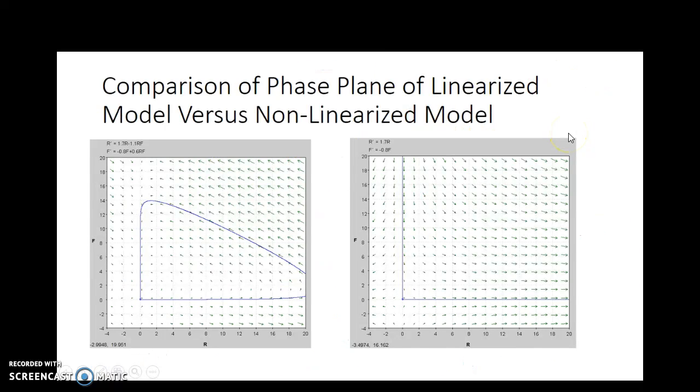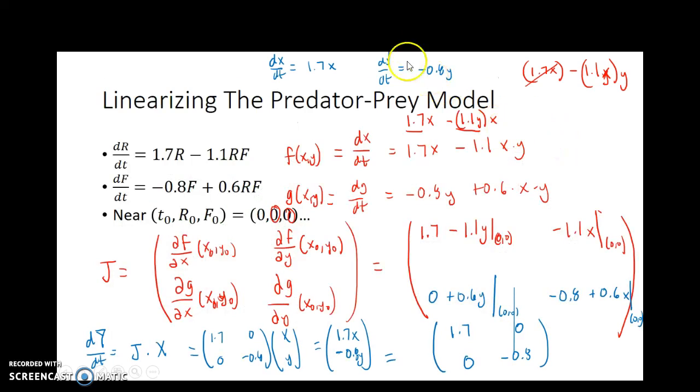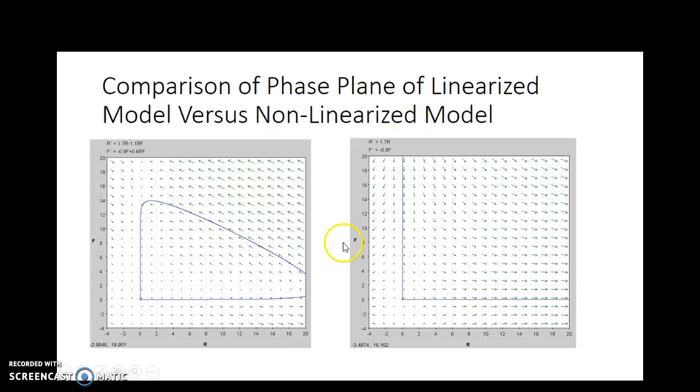Well, the question we may ask now is, how do these two solutions compare? That is, this is now a completely decoupled system, and we could proceed to solve this using one of the techniques available. But how would our solutions compare? This system is for the 1.7R minus 1.1RF, and negative 0.8F plus 0.6RF. And this is the linearized system: dR dt equals 1.7R, dF dt equals negative 0.8F. And you can see that there's a huge contrast.